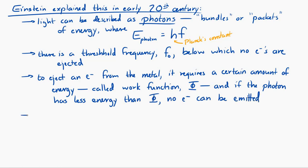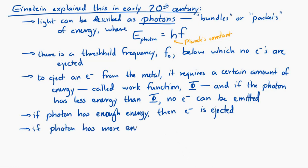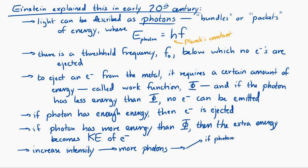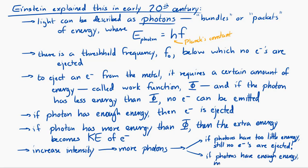If the photon does have more energy than the work function, then it can eject an electron. That extra energy goes into the kinetic energy of the ejected electron. If you increase the intensity of the light, all that happens is you eject more electrons. But if you're below that threshold frequency and your photons have too little energy, increasing the intensity will not eject any electrons. Each photon has too little energy to eject any electrons, and sending in more low-energy photons will not eject any electrons.